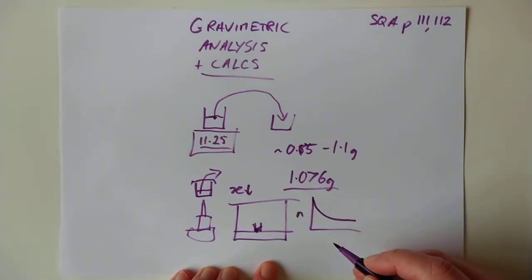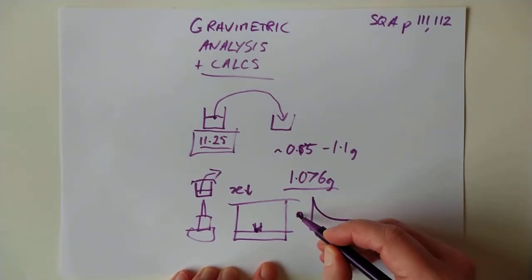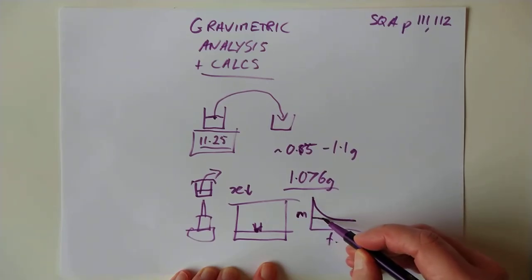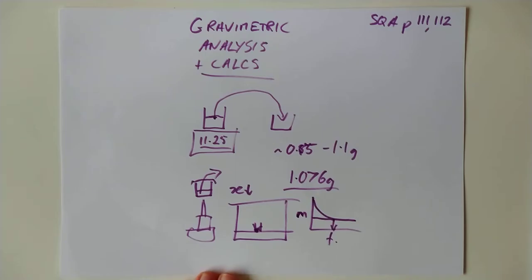You've dropped down by a certain number of grams. Pop it back on the heater again, blast it for another five minutes, cool it on the desiccator, pop it back on the scales again. Keep going until your mass ends up, of course, pretty much flat like that. So that's mass against time, effectively.